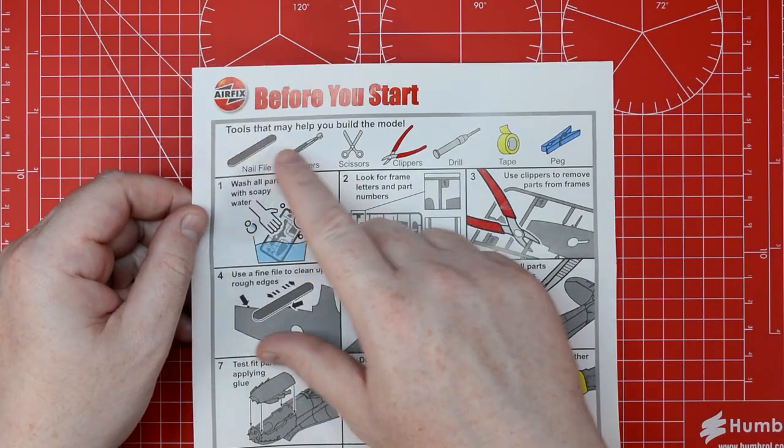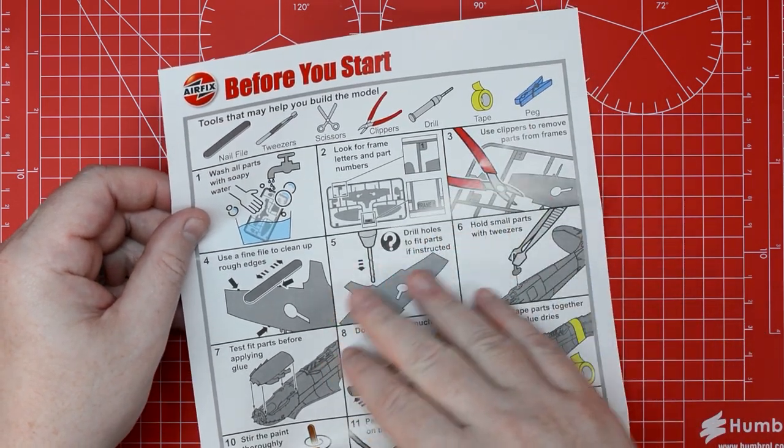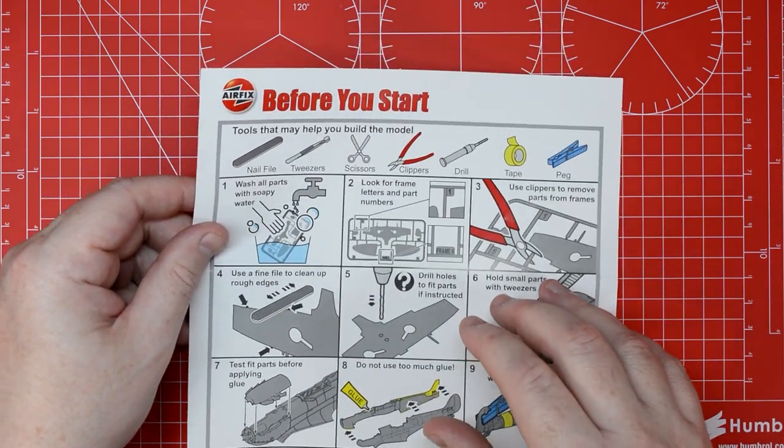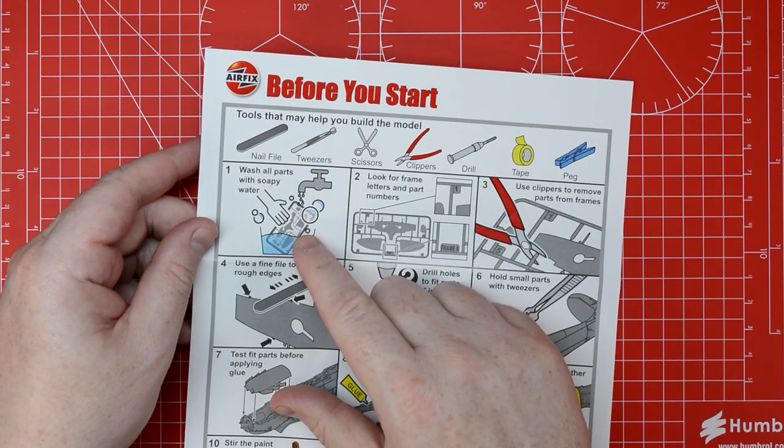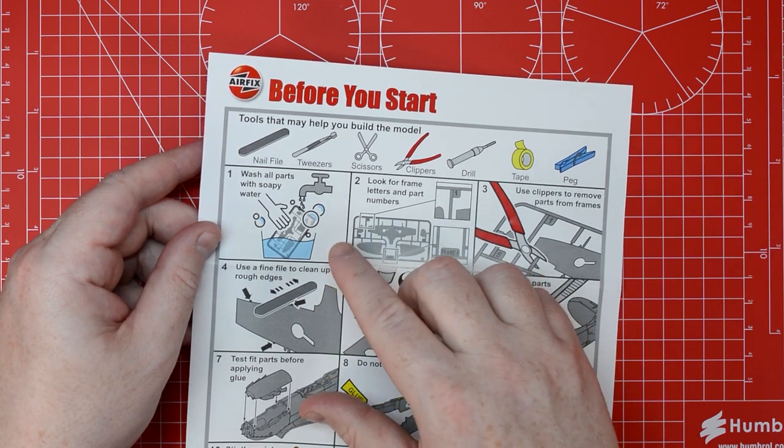There's also a before you start guide included which details the common tools and techniques used to build models. Of particular interest is step one, which is to wash all of the parts with soapy water. We'll be carrying out this step before we start our build.